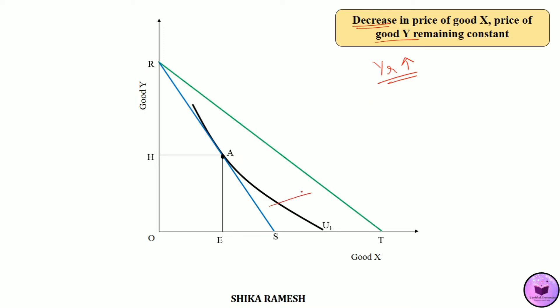In this new budget line the consumer again reaches a new equilibrium point at point B at a higher utility level U2. Note that the nominal income is the same in both these budget constraints; only the purchasing power differs.